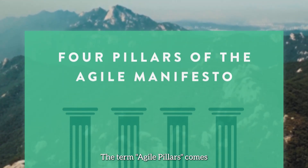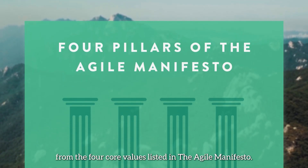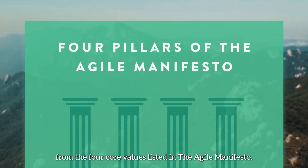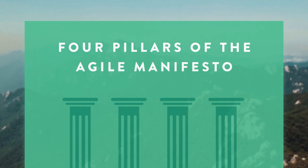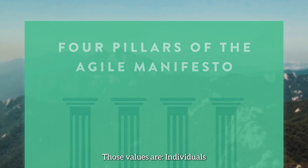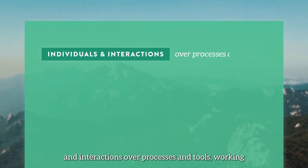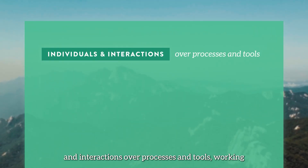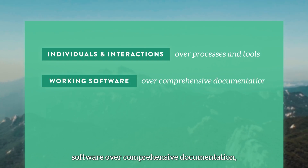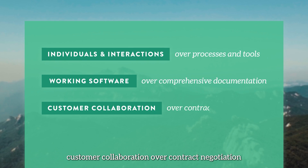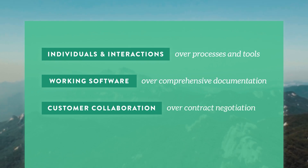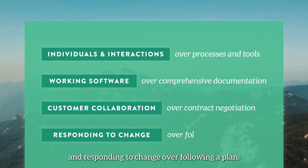The term Agile Pillars comes from the four core values listed in the Agile Manifesto. Those values are: individuals and interactions over processes and tools; working software over comprehensive documentation; customer collaboration over contract negotiation; and responding to change over following a plan.